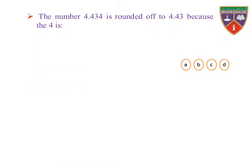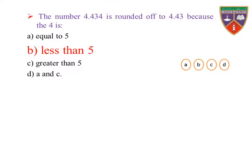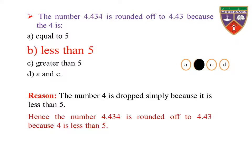The number 4.434 is rounded off to 4.43 because the 4 is — option A: equal to 5, B: less than 5, C: greater than 5, D: A and C. The key is less than 5, therefore the correct option is B. Reason: the number 4 is dropped simply because it is less than 5. Hence, the number 4.434 is rounded off to 4.43 because 4 is less than 5.